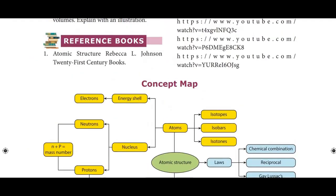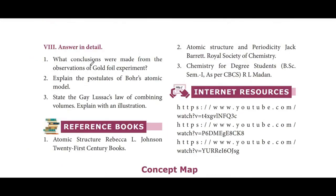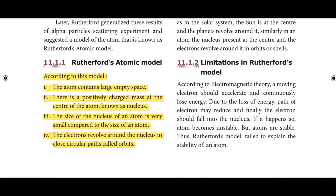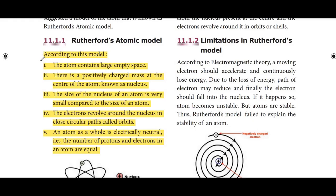Answer in detail. First: What conclusions were made from the observations of the Gold Foil experiment? According to this model, there are five conclusions. Refer to page number 126 — it is highlighted in the textbook.